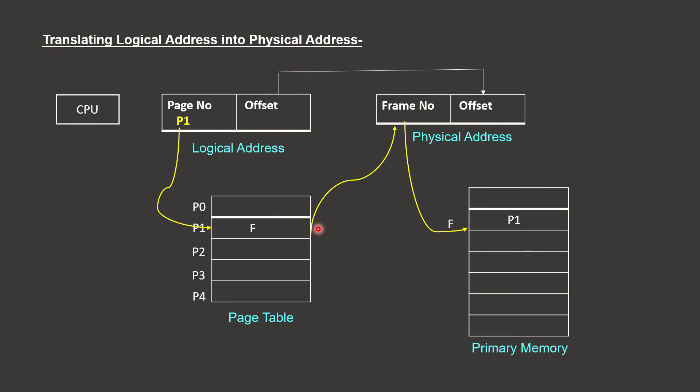Here is the address translation process: using the page table, we translate the logical address to a physical address. The page table is independent for each process. The page table is not stored in the PCB because of its size; instead, its base address is stored in the PCB.